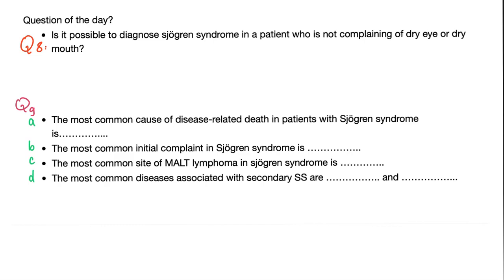First, let me help you answer the questions from the previous video. Number one: is it possible to diagnose Sjogren's syndrome in a patient who is not complaining of dry eyes or dry mouth? The answer is yes. Similarly, is it possible to diagnose myocardial infarction in a patient not complaining of chest pain? Yes — if you have objective proof such as high cardiac biomarkers, a clogged coronary on catheter, or a biopsy showing dead cells, that confirms myocardial infarction. These cases aren't a majority, but they do exist.